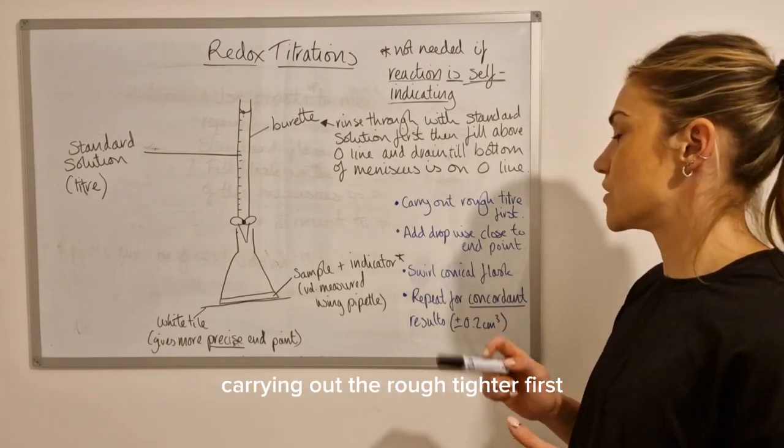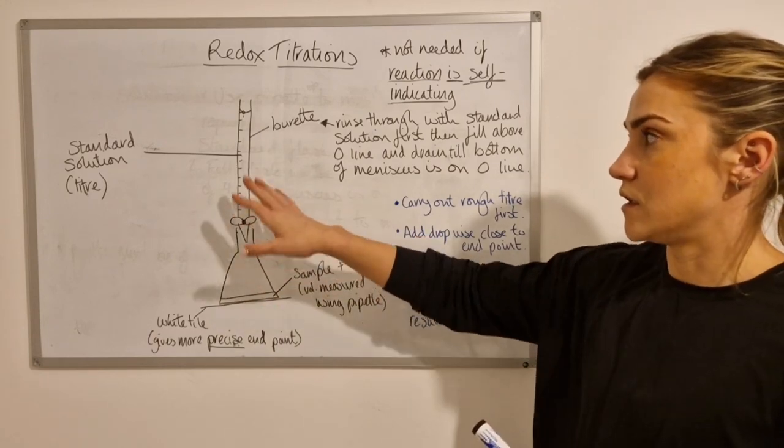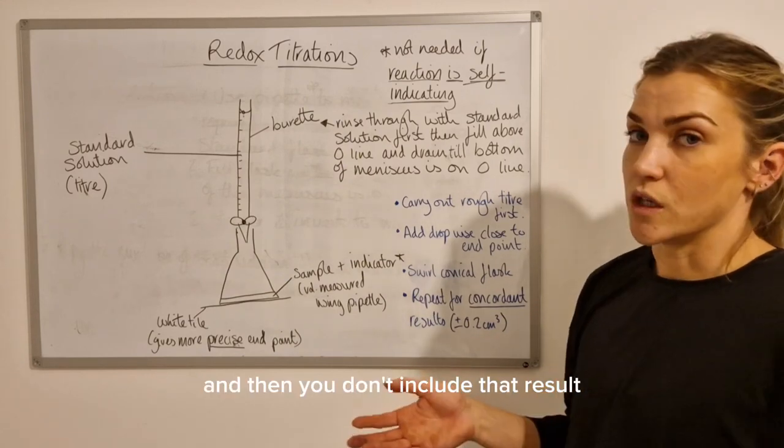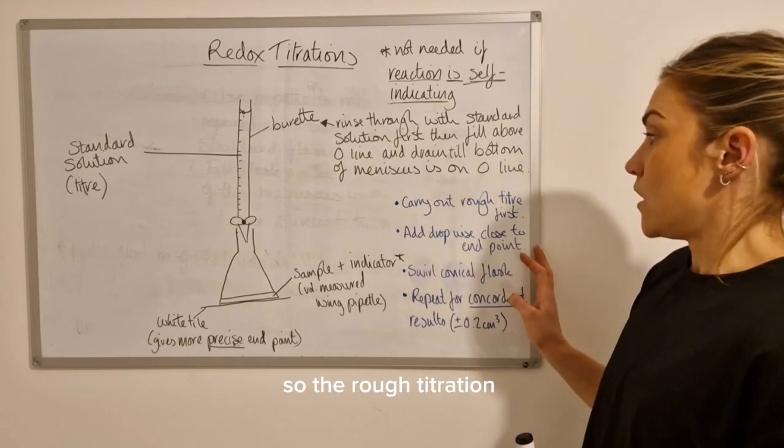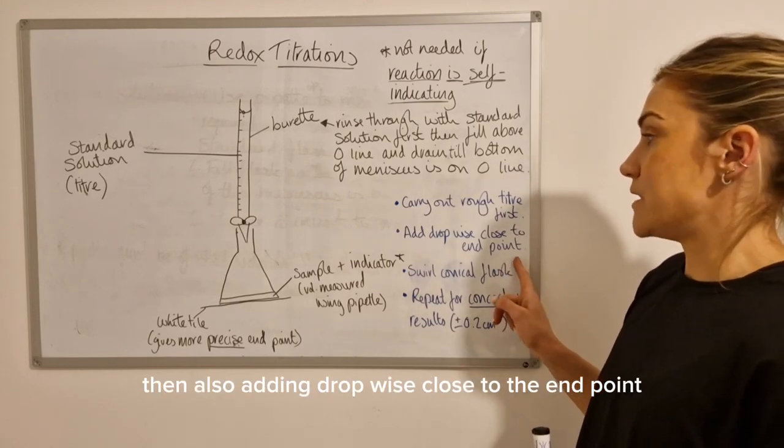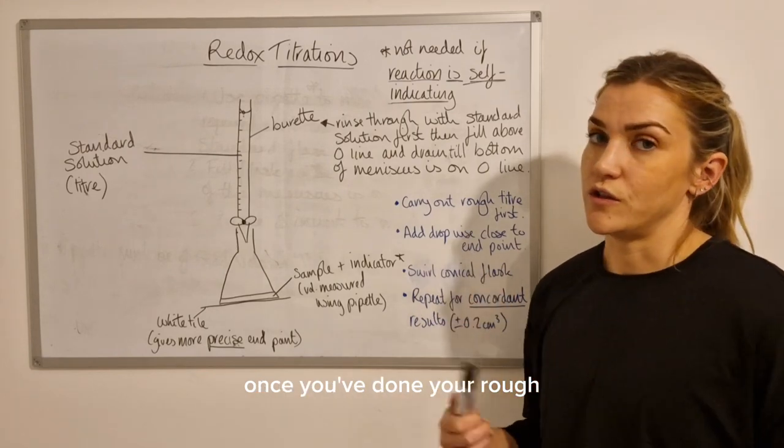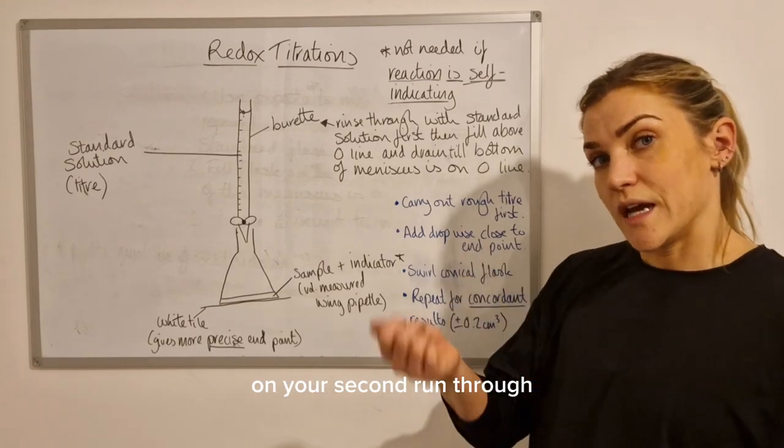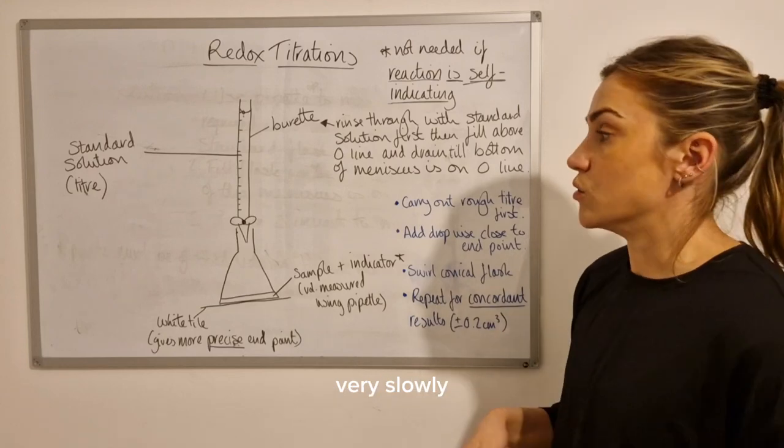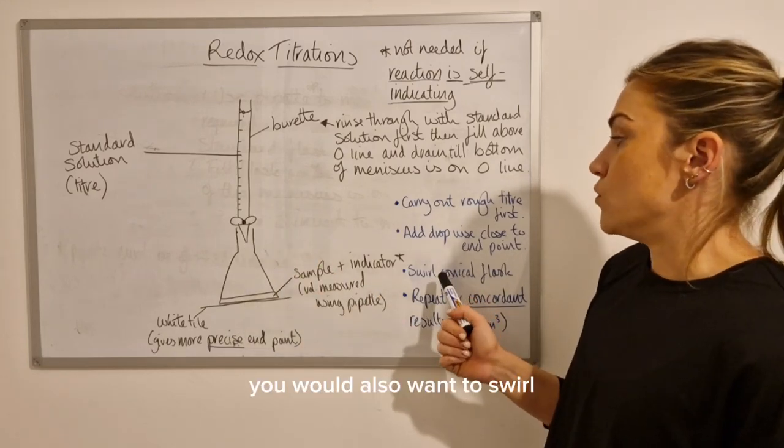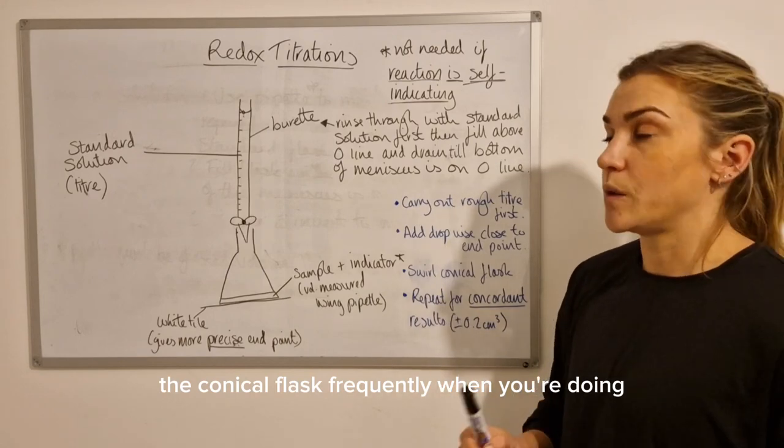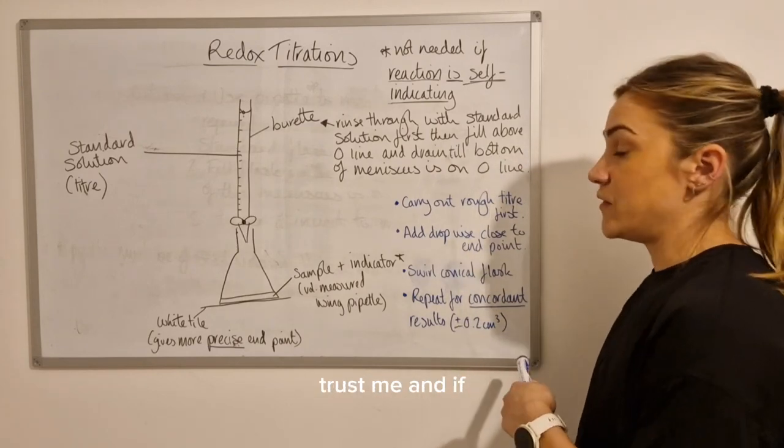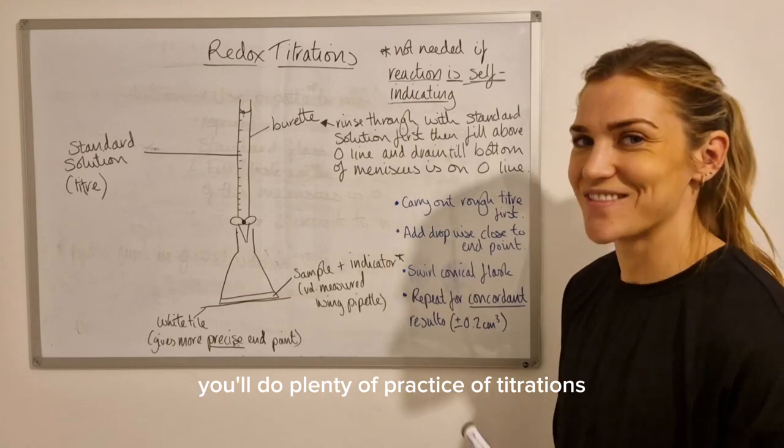Carrying out the rough titer first - so that's where you do an initial titration and find out roughly where the end point is going to be, and then you don't include that result in your average calculation at the end. So the rough titration, then also adding dropwise close to the end point. So once you've done your rough, you know roughly where the end point is going to be. So when you get within a couple of centimeters cubed of that in your second run through, you would add drop by drop very slowly using the tap. You would also want to swirl the conical flask frequently when you're doing the titration, if not constantly. I know it can be a bit tricky sometimes to coordinate that, but it comes with practice, trust me. And if you go to study chemistry, you'll do plenty of practice of titrations. So you swirl the flask - that helps with accuracy.